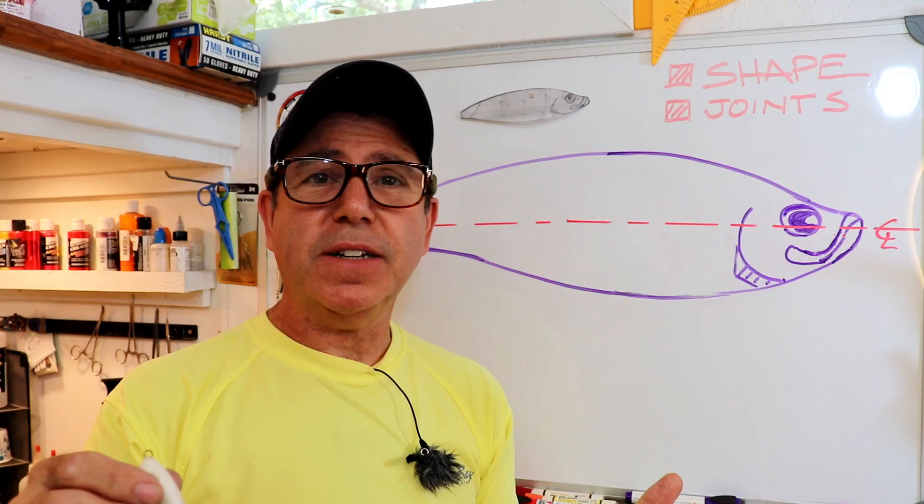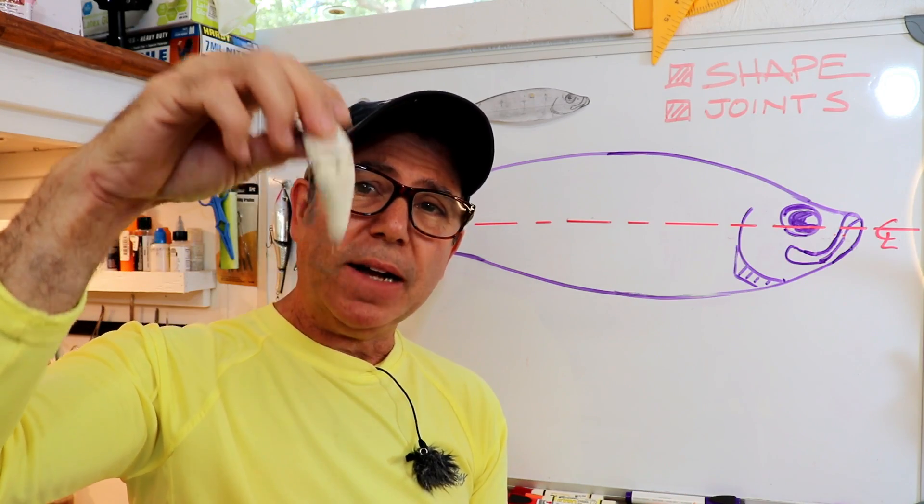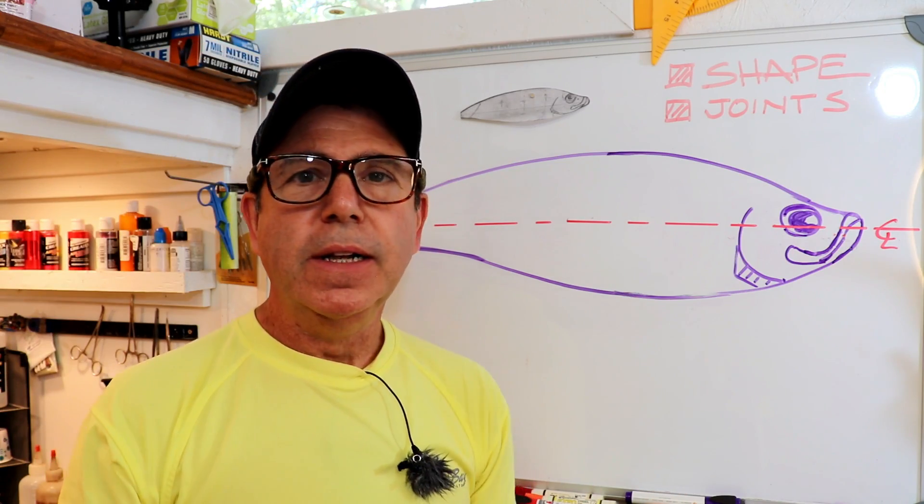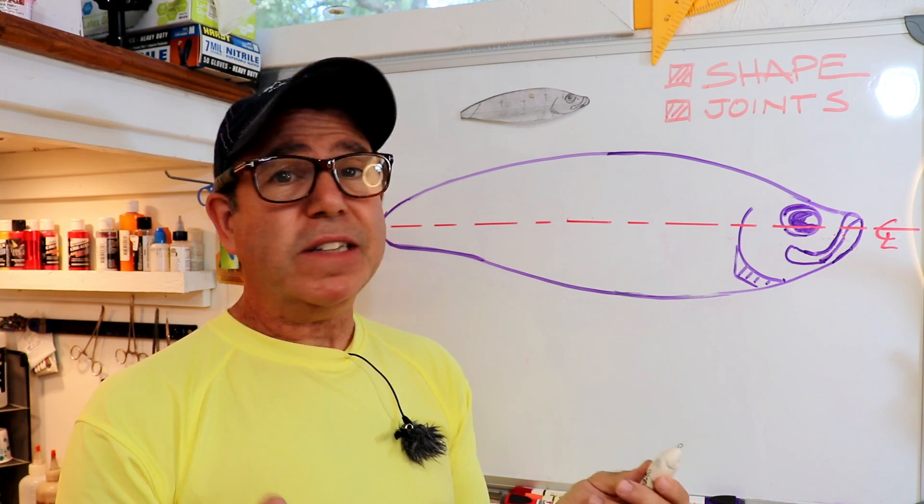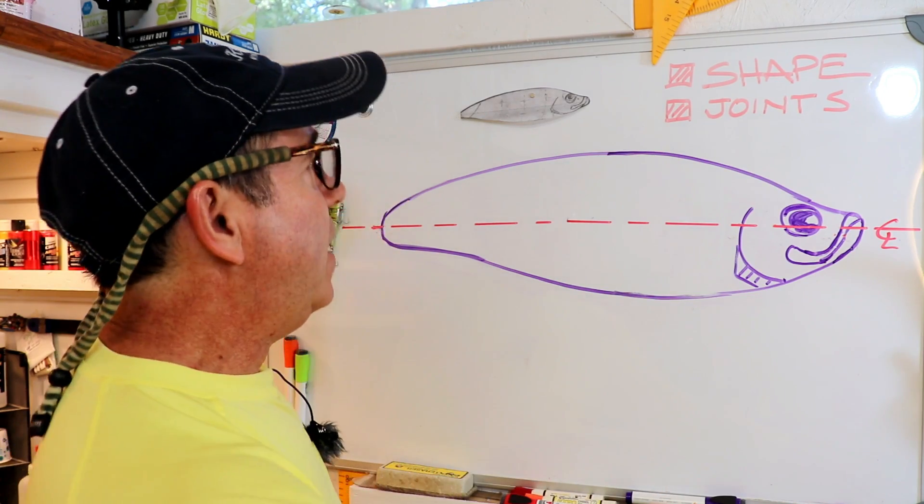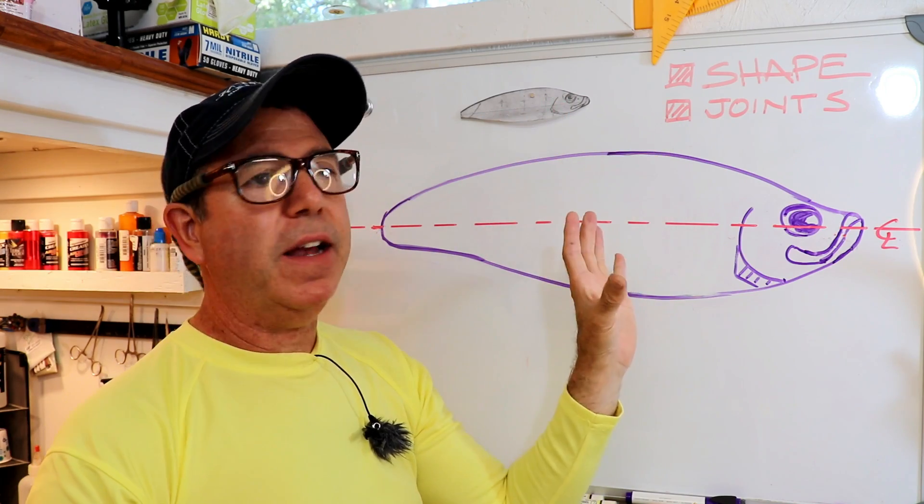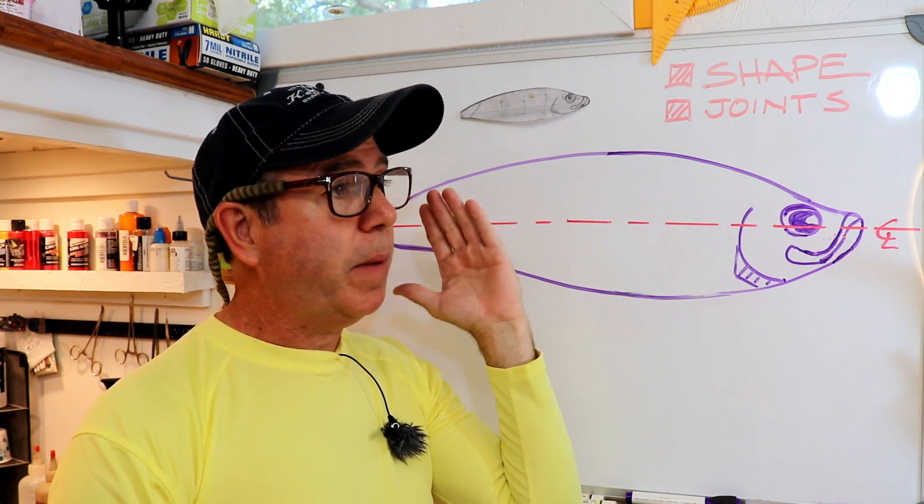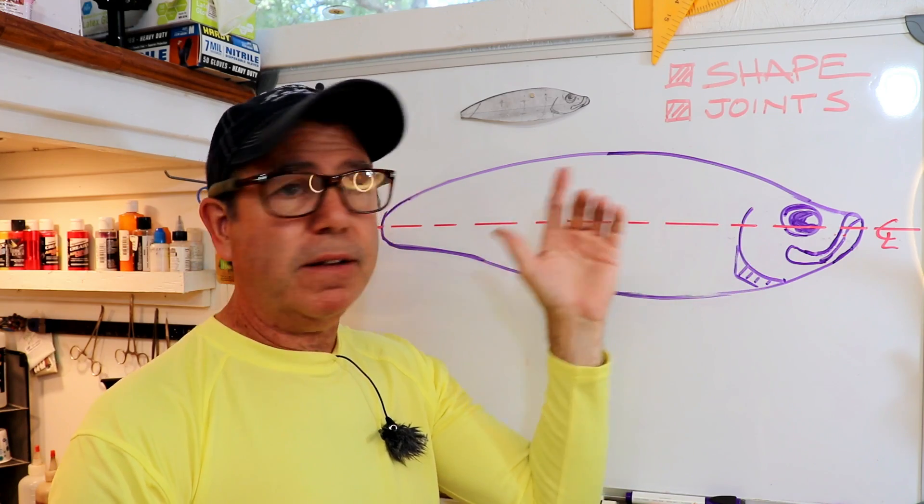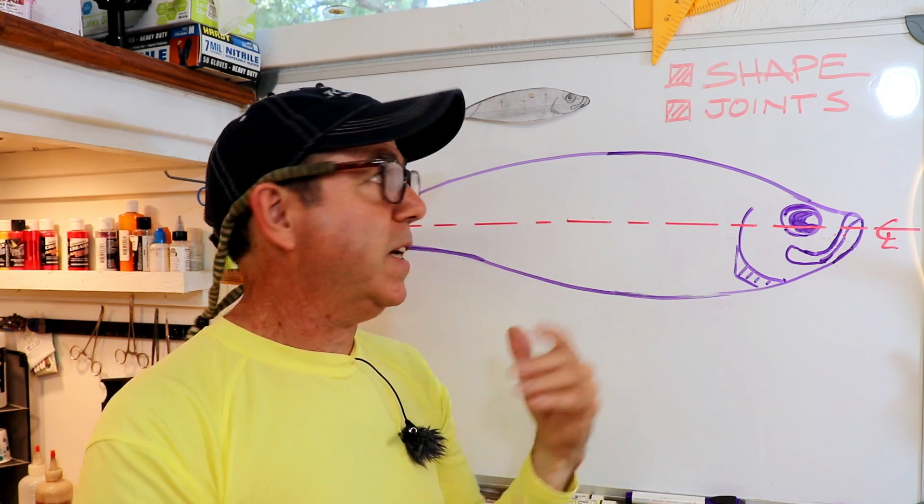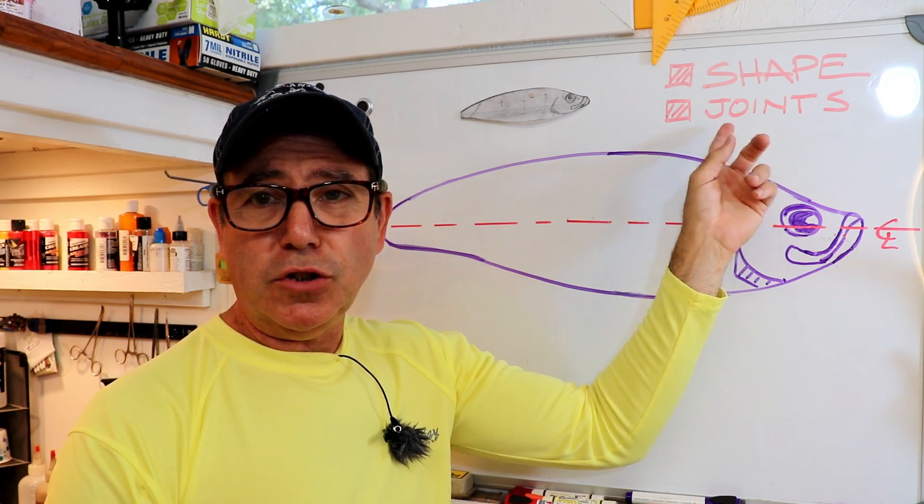Welcome back to the Engineered Angler. I did want to go ahead and back up a little bit on this two-part deal. This is part two of the series. This time we're going to talk more about shape because we really need to refine this. We've only talked about the profile shape and not the plan and the cross-section, and we'll talk about joints.